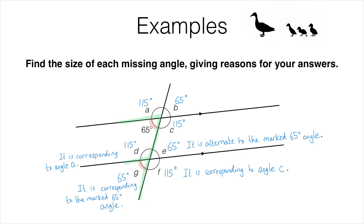The most important point to take away from this video is that alternate and corresponding angles only appear when you are dealing with parallel lines. You either need to have parallel prongs on your F shape, or the top and bottom of a Z shape to be parallel, in order to have corresponding or alternate angles. So before you go looking for F and Z shapes in diagrams involving angles, make sure you've got a pair of parallel lines first of all. If the diagram does have parallel lines, there's a very good chance the question will involve alternate or corresponding angles, or maybe even both.